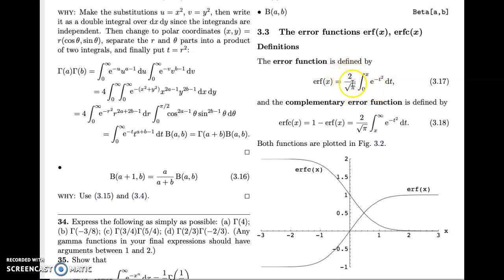The reason why you've got 2 over root pi here is simply so that as x tends to infinity, you get the answer 1. So erf of infinity is plus 1. You may or may not know that the integral of minus infinity to infinity of e to the minus t squared dt is, in fact, just root pi, which is why you end up with this 2 over root pi as the normalization constant.